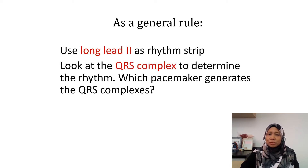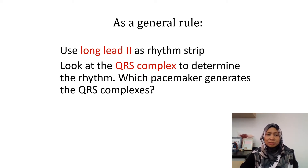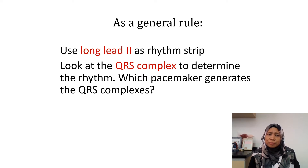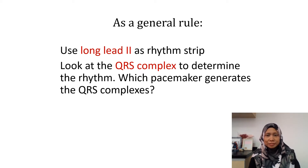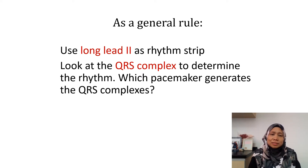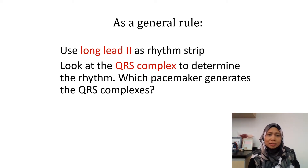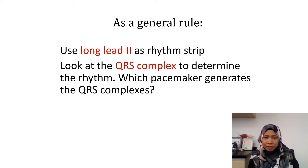We look at the QRS complex to determine the rhythm, and we need to decide which pacemaker generates the QRS complex. The QRS complex reflects ventricular depolarization, which causes ventricular contraction. Ventricular contraction is very important because it determines the cardiac output — the blood coming out from the heart. That's why the QRS complex is so important.